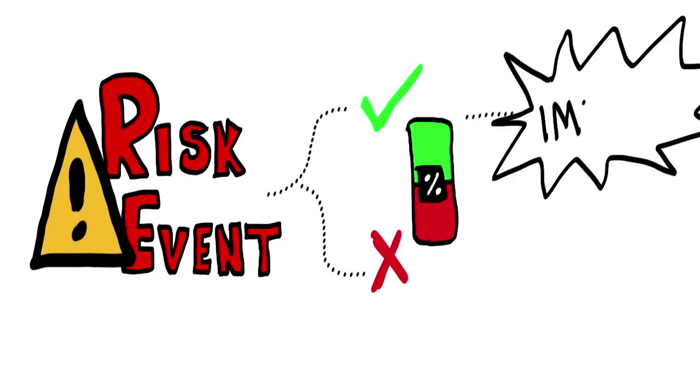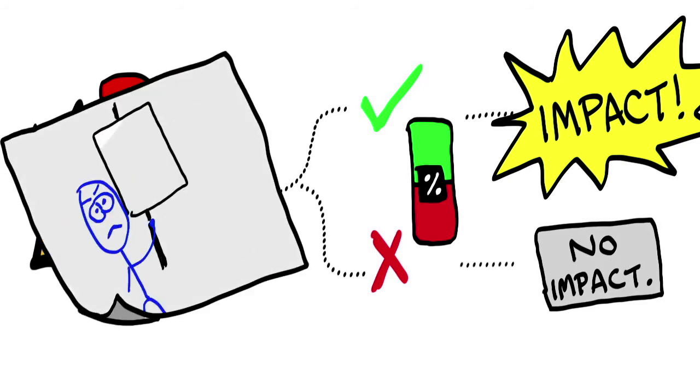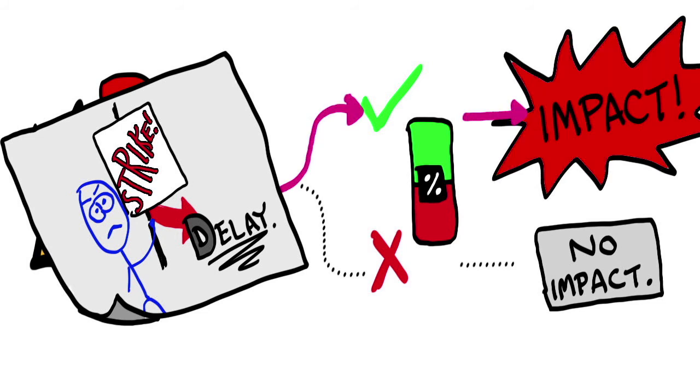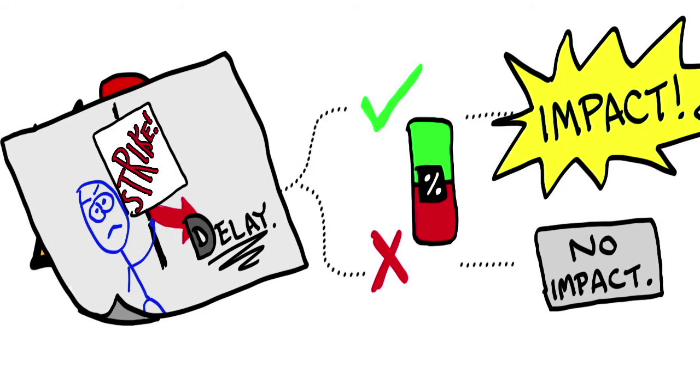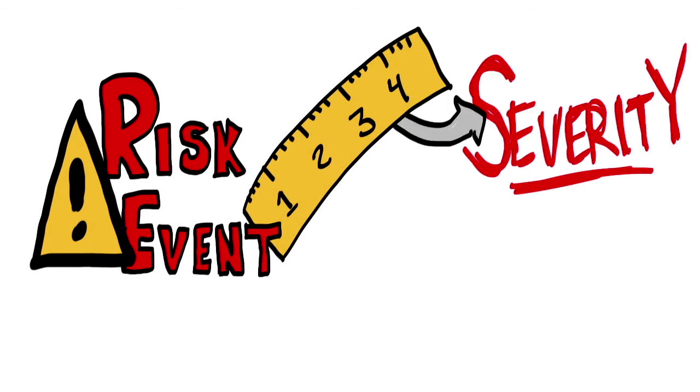If it does occur, it has an impact on the estimate, otherwise it has no impact. An example might be a labor strike that delays construction of a critical asset. It may happen, in which case there is a significant impact on the project. It may not, and thereby have no impact.